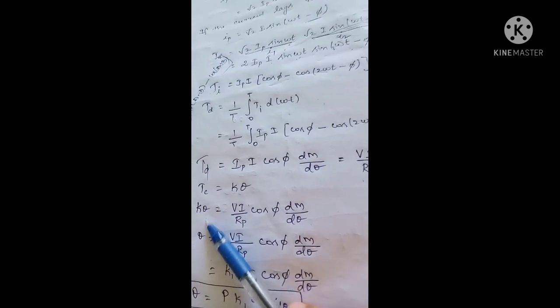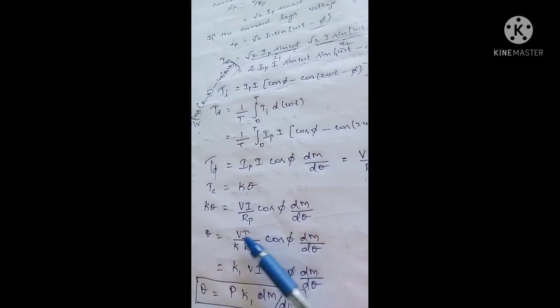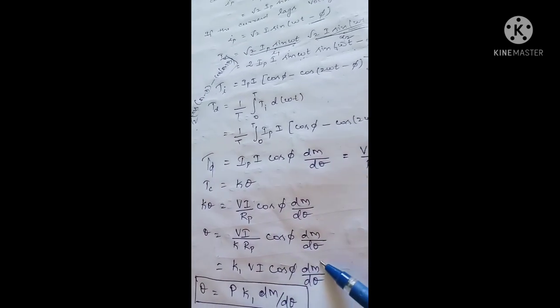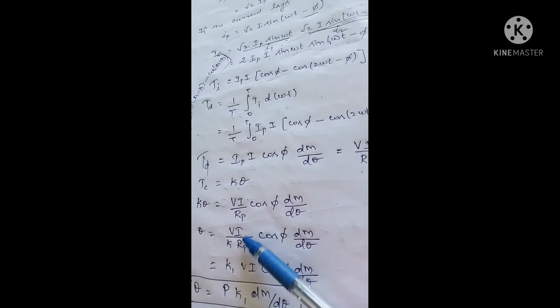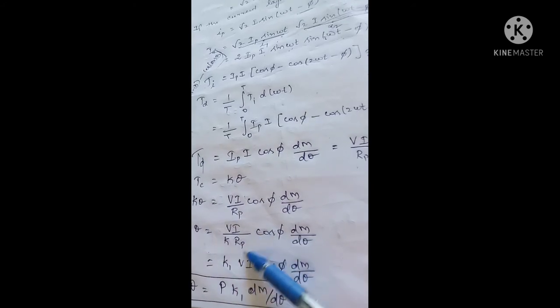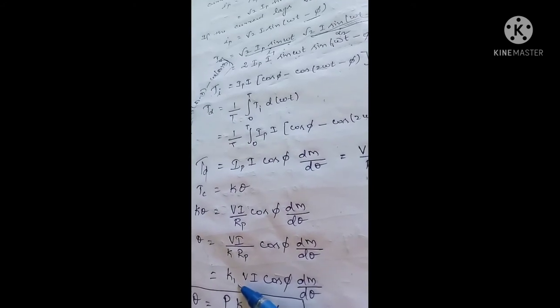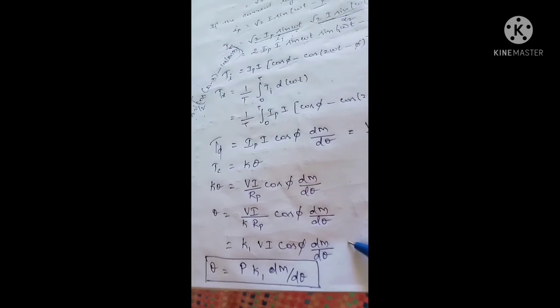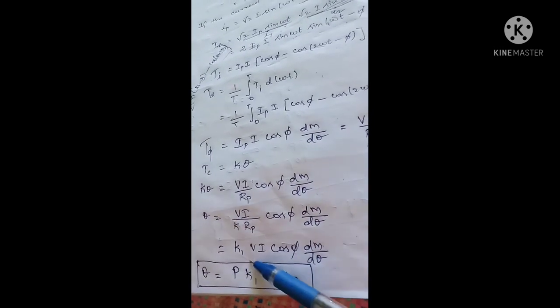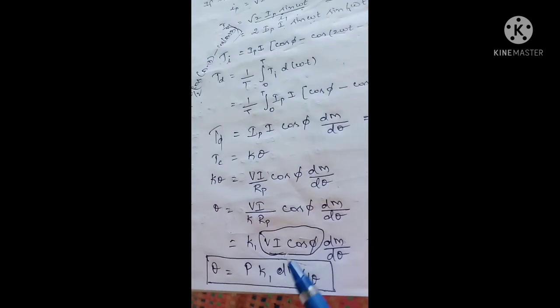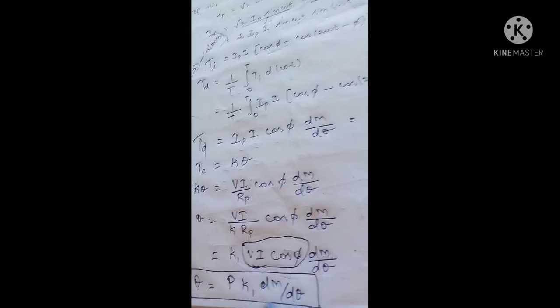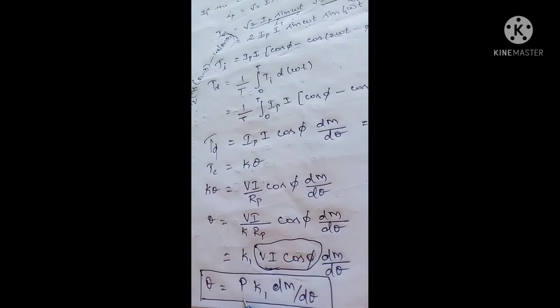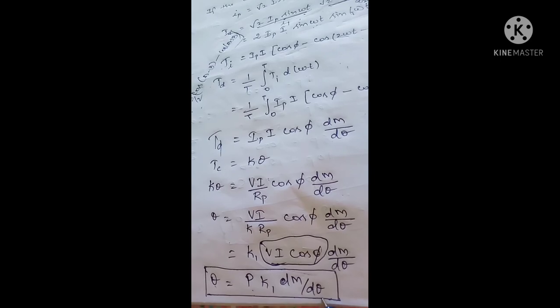Solving for θ: θ = (V · I) / (k · Rp) · cos φ · dM/dθ. Since V · I · cos φ is nothing but the power equation P, we get θ = P · k1 · dM/dθ. Therefore, deflection θ is directly proportional to power, since k1 and dM/dθ are constants.